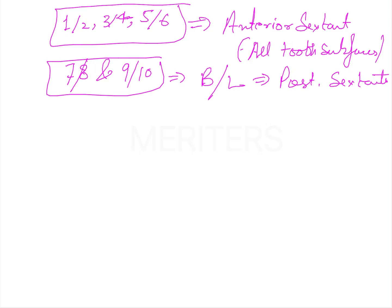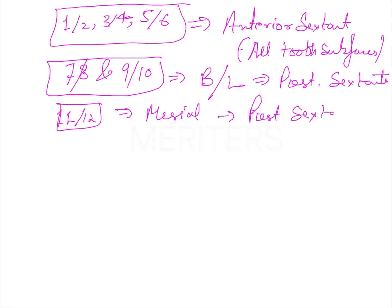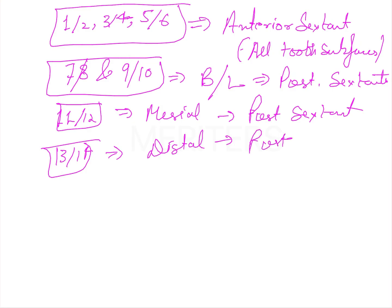Gracey curettes 11 and 12 are used to scale the mesial aspect of the teeth in posterior sextants. Then you have 13 and 14, which are used for the distal aspect of teeth in posterior sextants.